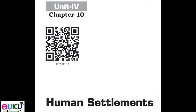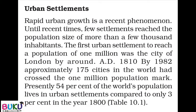Hello students, in lesson number 10 on human settlements, we will learn about urban settlements. Rapid urban growth is a recent phenomenon — until recent times, few settlements reached a population size of more than a few hundred inhabitants. The first urban settlement to reach a population of 1 million was the city of London, by around AD 1810. By 1982, approximately 175 cities in the world had crossed the 1 million population mark.